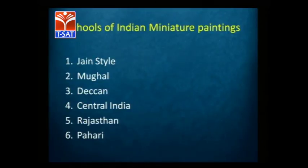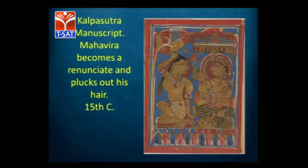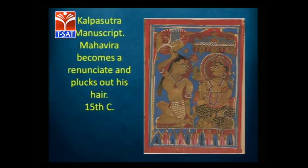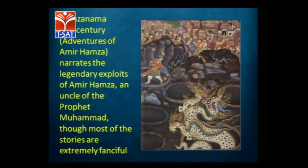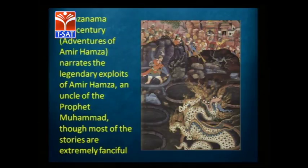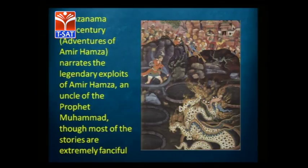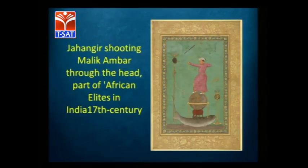For miniature painting, you have different schools: Jain, Mughal, Deccani, Central India, Rajasthani, and Pahari. Jain miniatures are largely related with Kalakacharya Katha and Kalpa Sutra — Jain stories. Mughal miniatures have contributed enormously to Indian painting. The Hamzanama is one of the most famous albums from Mughal painting. Another example is Jahangir Shooting Malik Ambar — a later Mughal painting.